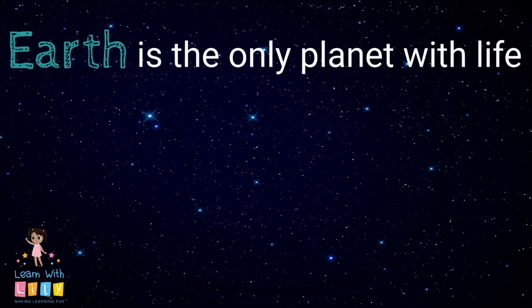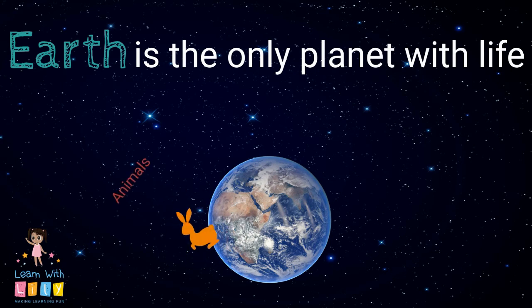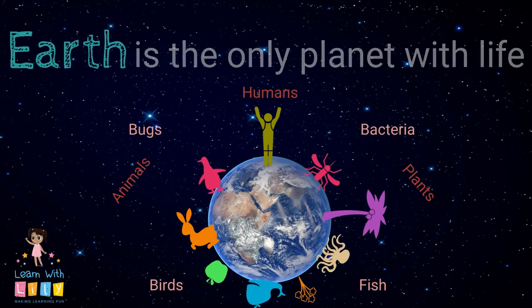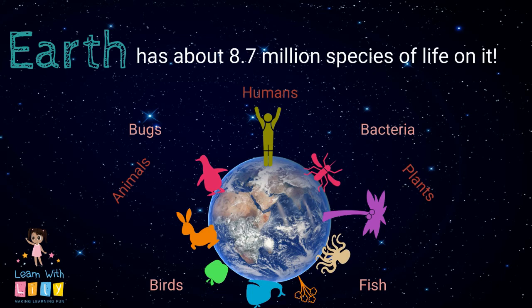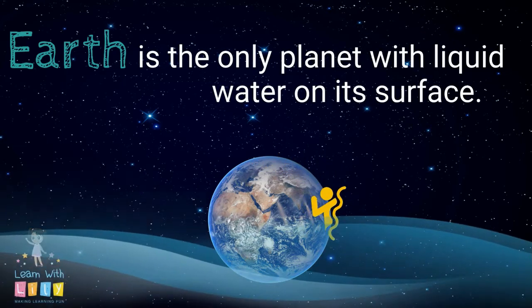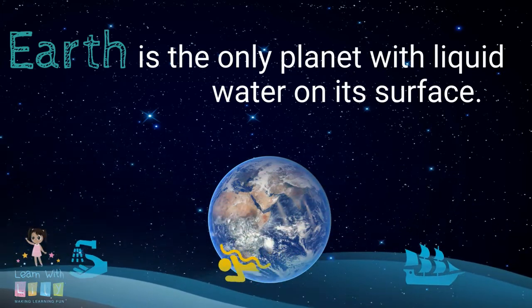Earth is the only planet we know of with life. That's right, there's all sorts of animals, humans, and plants living on Earth. There are all kinds of living organisms like bugs, birds, fish, and bacteria. How many species of life are there on Earth? 8.7 million. Wow. This is also special in our solar system because it's the only planet with liquid water on its surface.